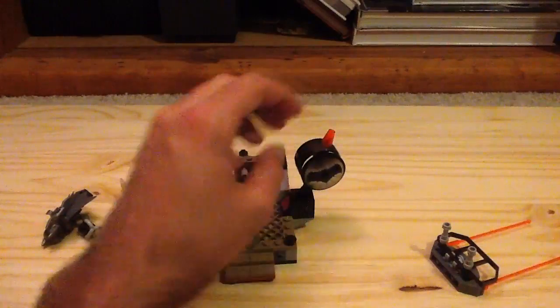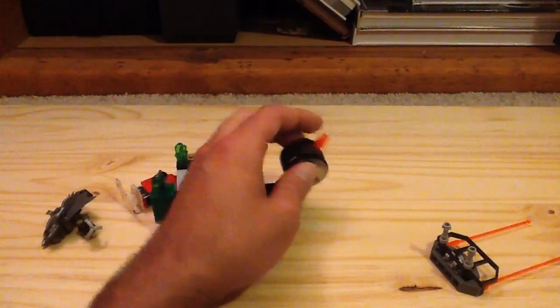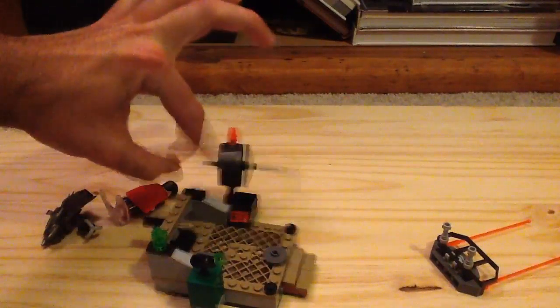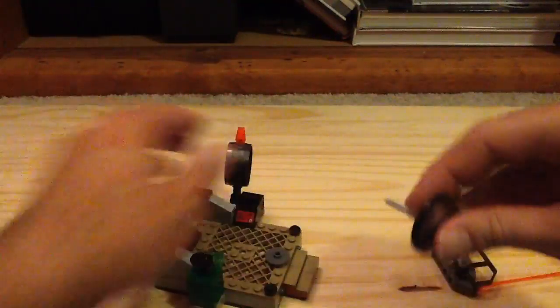And then you have the bat signal with this nice printed dish part. And there's also a flick missile, so you can fire it off like that. And a better look there at the print looks really good.